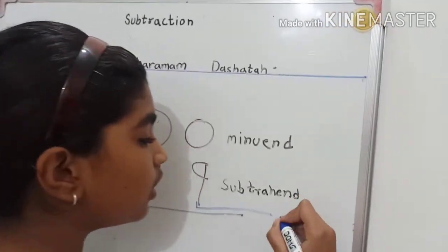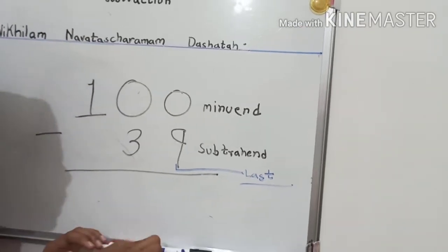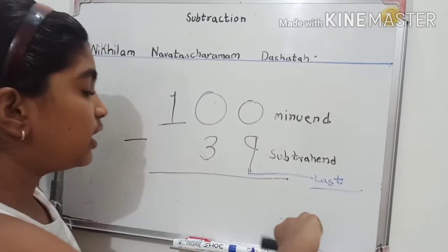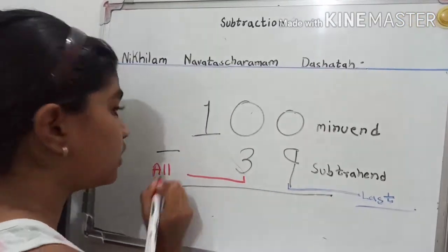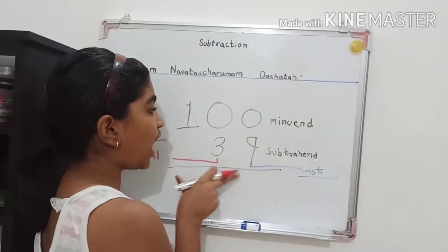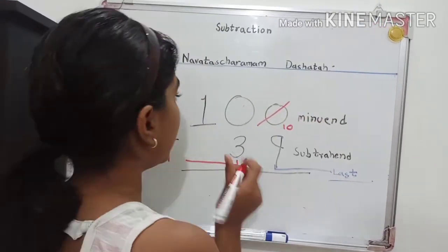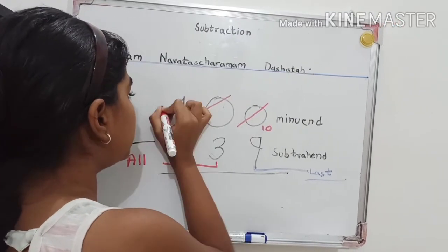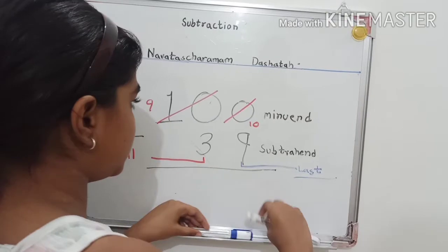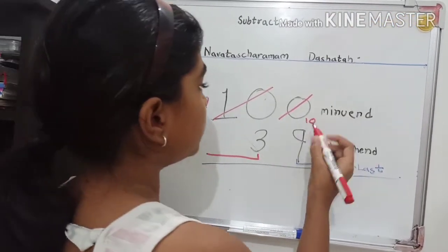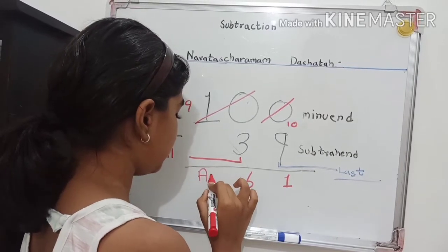The digits to the left of the last digit are the 'all' numbers. Now we convert: the last zero becomes 10, and the remaining 10 becomes 9. So 10 minus 9 is 1, and 9 minus 3 is 6. Your answer is 61.